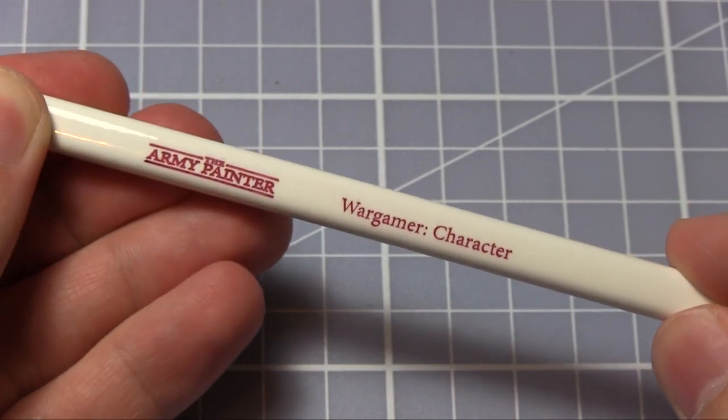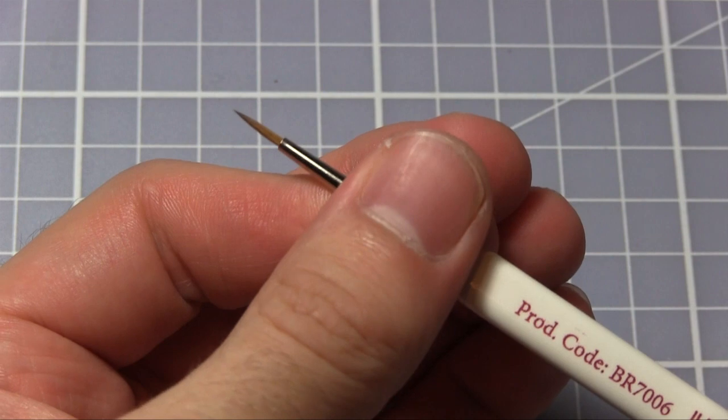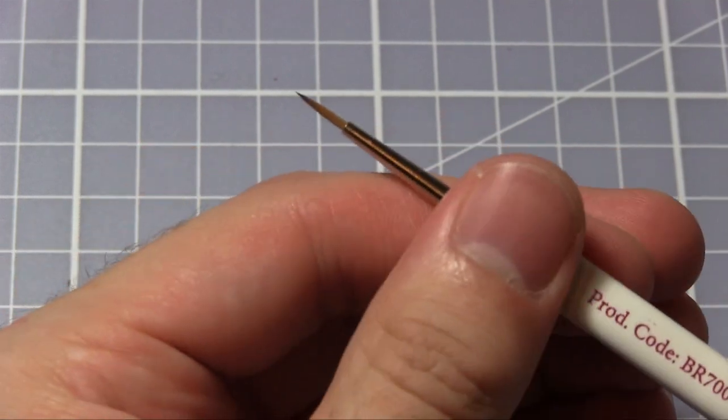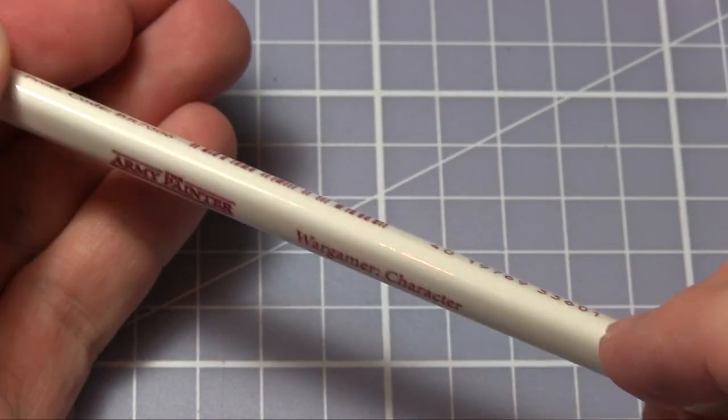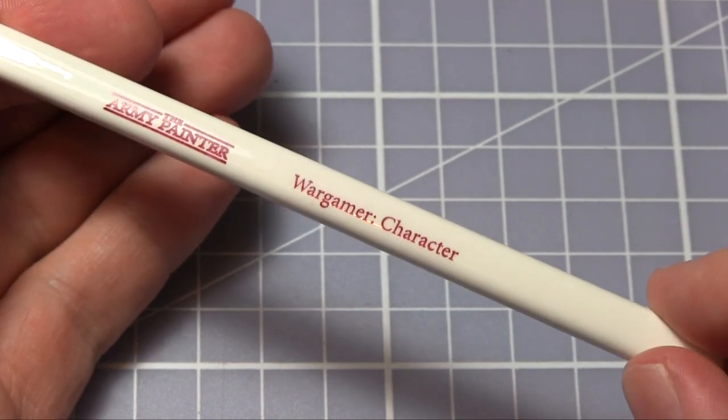Here we have the Wargamer Character Brush, which is excellent if you are planning on doing faces and details on hands and armor. It's best if you reserve it for your characters and you want to achieve that extra little bit level of detail.